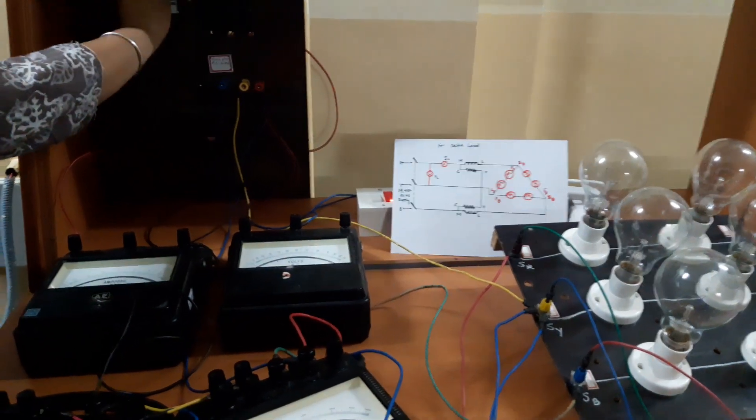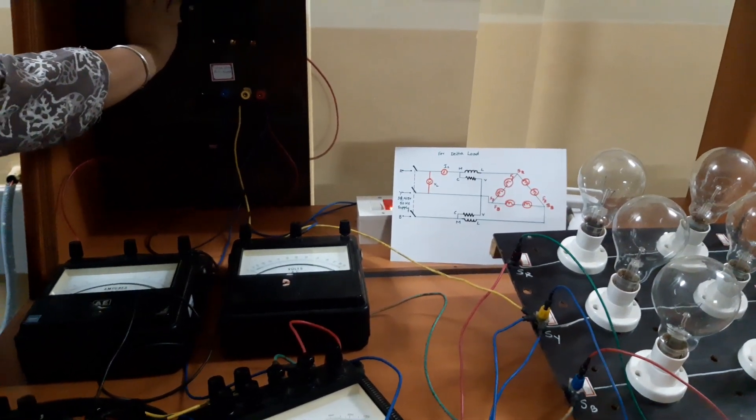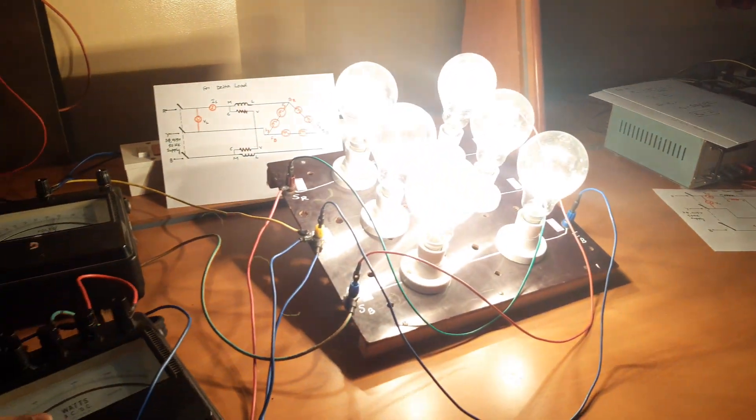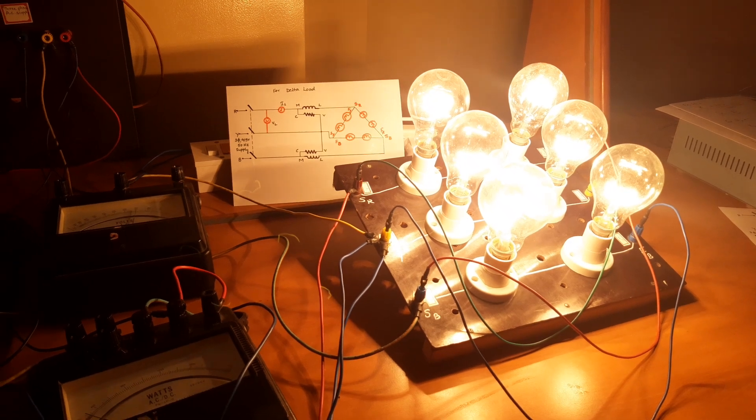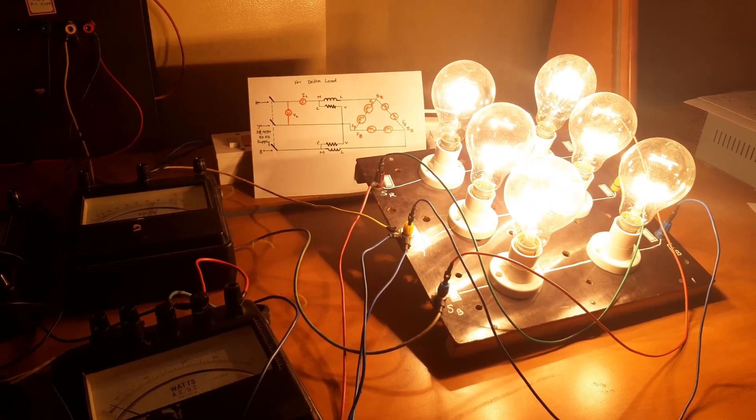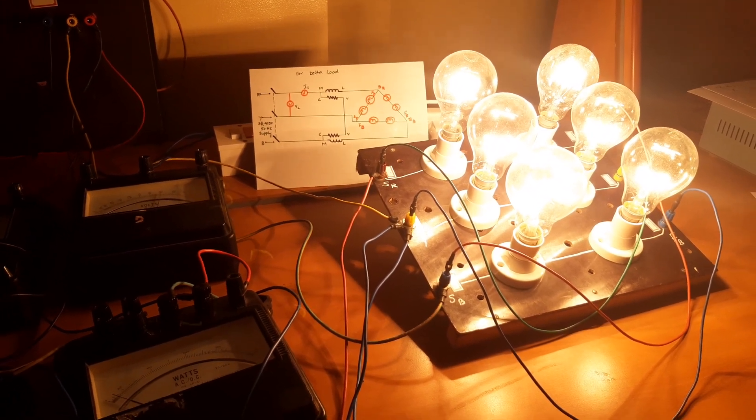Let us switch on the circuit for the delta connected 2 wattmeter method and see how the circuit behaves. We see the lamps glowing much brighter than in the previous condition, and we know the reason why from the previous experiment.